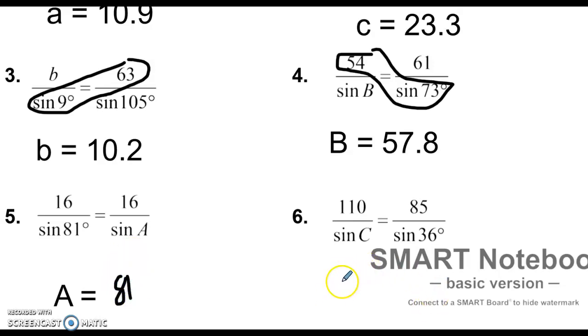And the last one. First I'm going to take 110 sine of 36, find an answer, divide it by 85. I get 0.76066. So I want to find the inverse sine of that answer and I get 49.5.